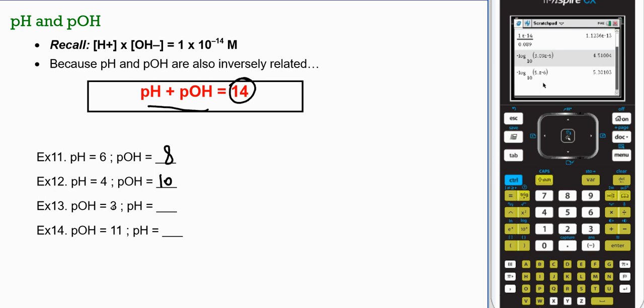My pOH is 3, 3 from 14 gives me 11, pH of 11. When pOH is 11, 11 from 14 gives 3. So, you see how these will always add to form 14. So you can use that as a tool in your conversions.